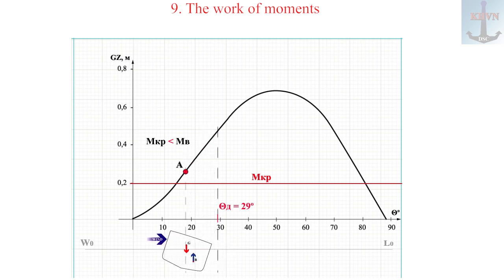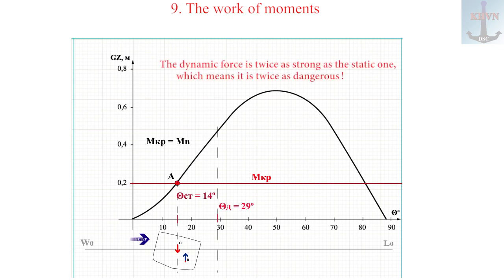So it quickly straightens the ship. According to the same laws of inertia, the ship misses the points of equilibrium of moments. Further damped vibrations and the ship calms down on a static roll of 14 degrees when the moments are leveled.